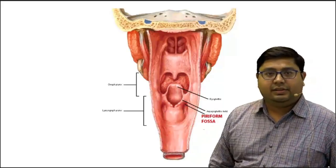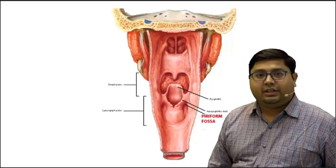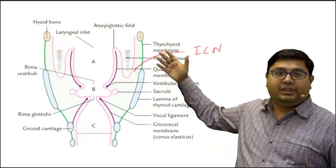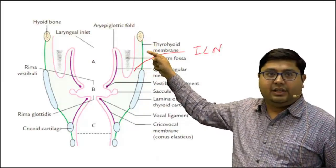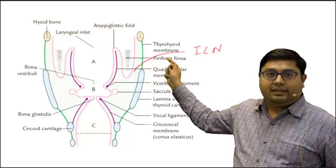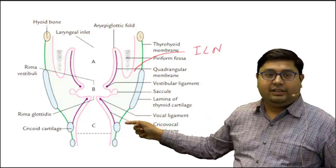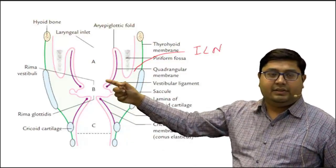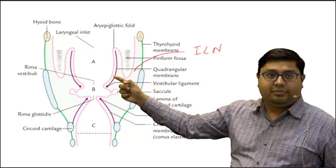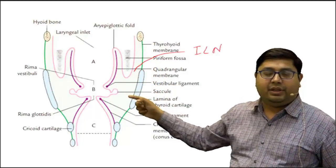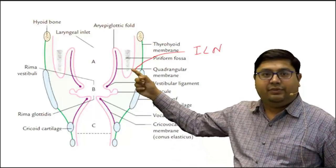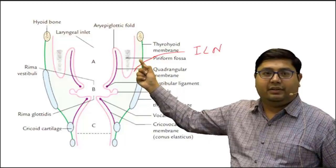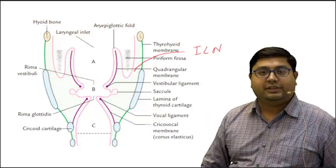The piriform fossa is the most common site for fish bone or any other foreign body lodging. Let's understand its anatomy in cross section. We have the hyoid bone, the thyroid cartilage, and the thyrohyoid membrane between them — which is pierced by the internal laryngeal nerve. The cricoid cartilage is also visible. The inlet of the larynx is formed by the aryepiglottic fold, overlying the quadrangular membrane and covered by mucous membrane. The piriform sinus is located lateral to the aryepiglottic fold and medial to the thyroid cartilage and thyrohyoid membrane.